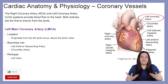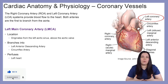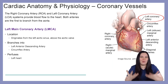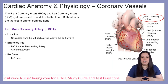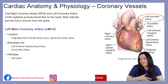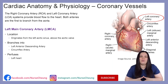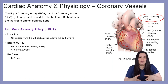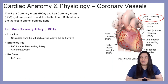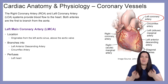Just like our systemic circulation, the heart also needs oxygenation in order to pump appropriately and maintain its function. That is why we have our coronary vessels. The right coronary artery, known as the RCA, and the left coronary artery, also known as the LCA, provide blood flow to the heart. Both arteries are a branch off of our aorta.